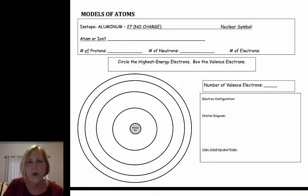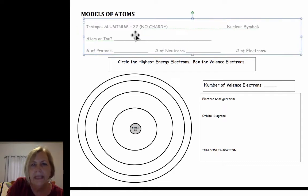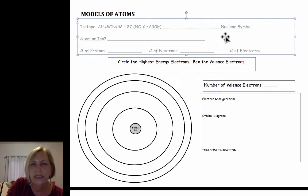In this video segment I want to tie together quite a few of the models and information that have been addressed in most of my atom videos leading up to this point. Let's take a look at the different ways we can model atoms starting with aluminum-27 with no charge. It's not the aluminum ion, it is neutral aluminum.